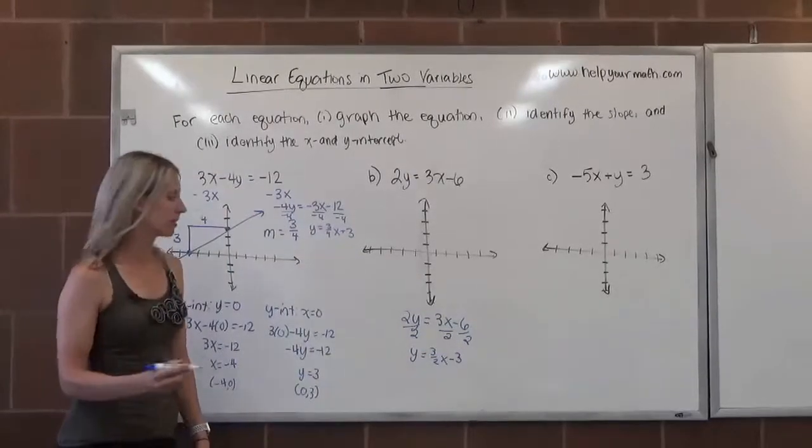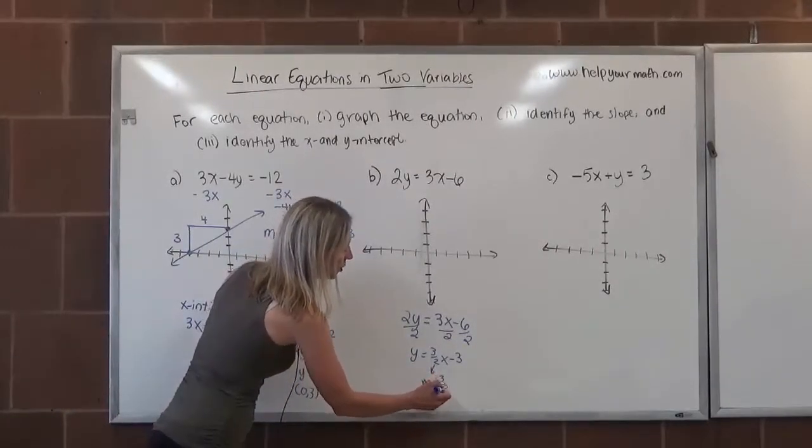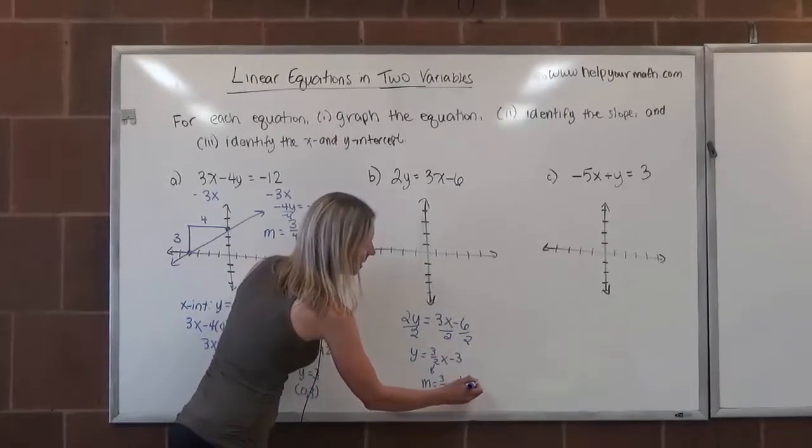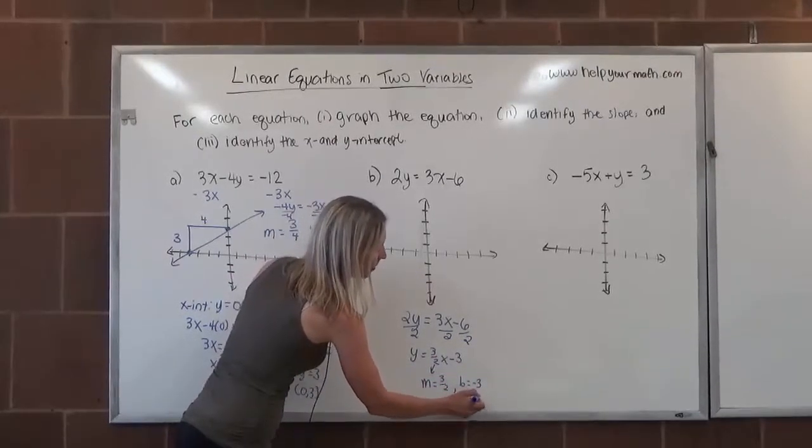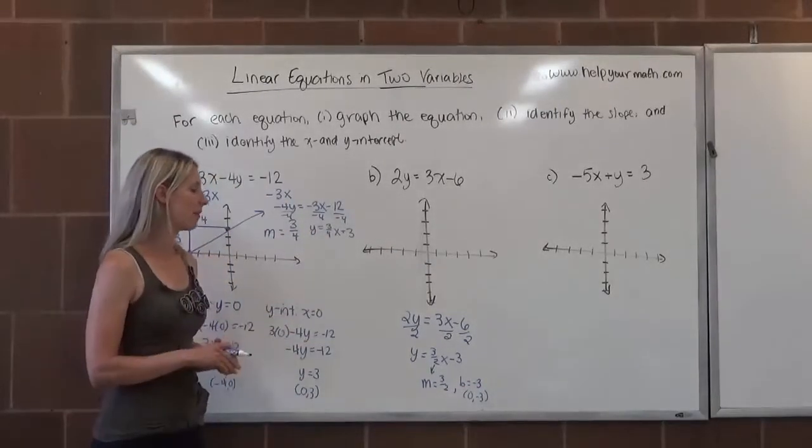Once it's in slope-intercept form, I know that the coefficient of x is the slope. So the slope is 3 over 2. And I have the y-intercept. B is negative 3. That's the ordered pair 0, negative 3.